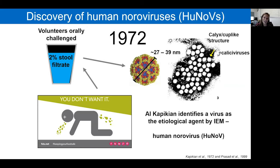This was the origin of the human noroviruses, and they are part of a family called caliciviruses. These viruses are named for their cup-shaped structures as seen by electron microscopy.